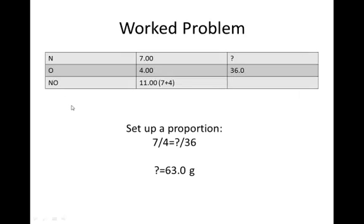So once again, I'm going to set up a table. In this case, I have nitrogen and oxygen, and then this is my nitrous oxide. And it doesn't matter what the formula is. I just put something that says that they go together. So I have 7 parts by mass of nitrogen, 4 parts by mass of oxygen, and 7 plus 4 makes 11.